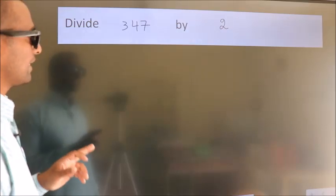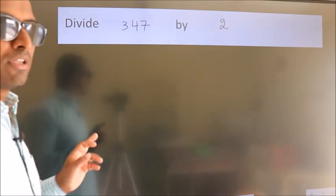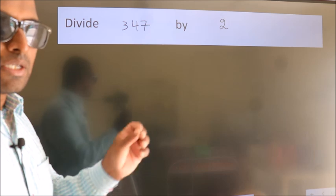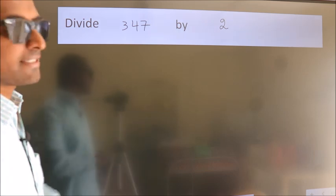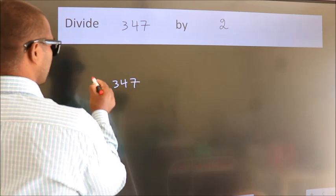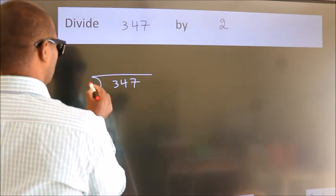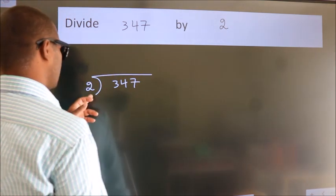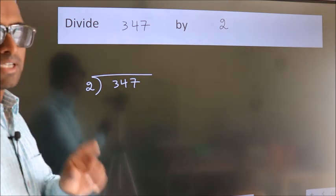Divide 347 by 2. To do this division, we should frame it in this way. 347 here, 2 here. This is your step 1.